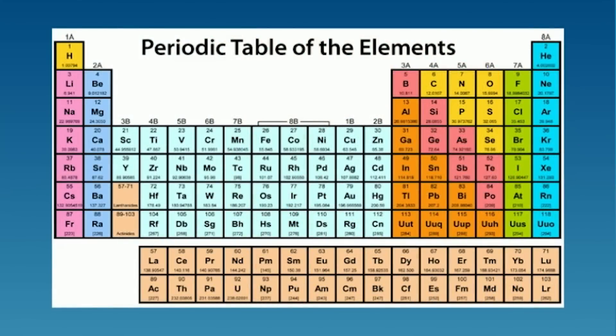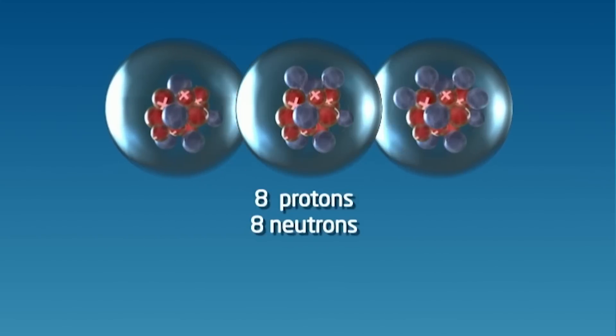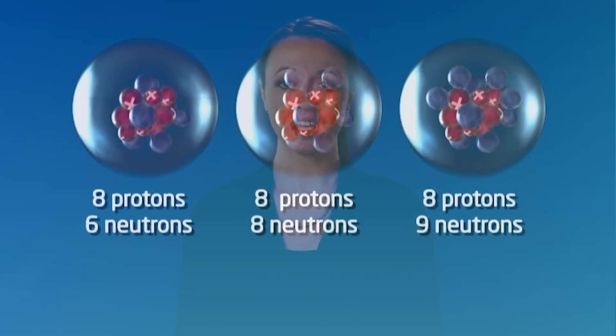Now, every element in the periodic table has a specific number of protons and neutrons. But sometimes, an atom will have too many or too few neutrons. When this happens, it becomes unstable or radioactive.